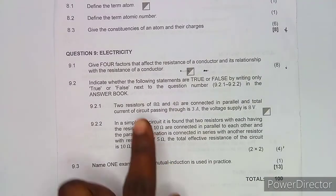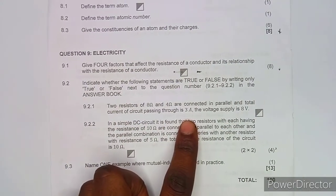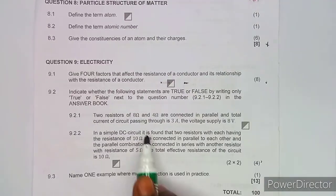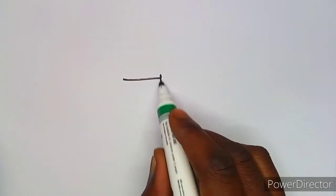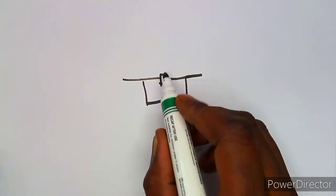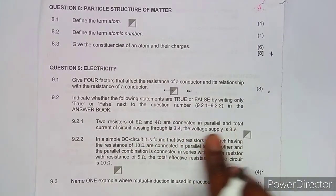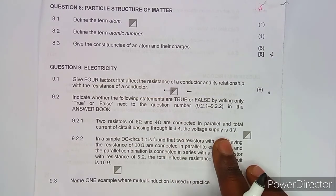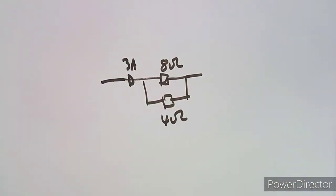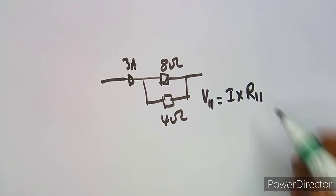Statement 9.2.1: two resistors of 8 ohms and 4 ohms are connected in parallel, the total current of the circuit is 3 amps, and the voltage supply is 8 volts. Let's draw the parallel circuit sketch — two resistors in parallel, 8 ohms and 4 ohms, with a total current of 3 amps flowing through. We know that in a parallel circuit, voltage equals current times total resistance.